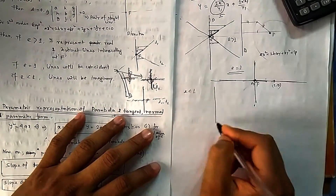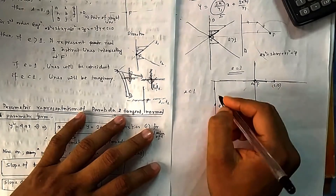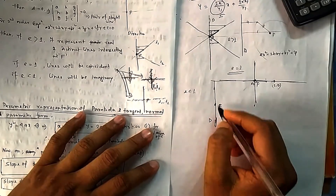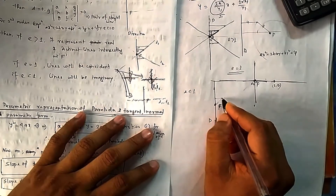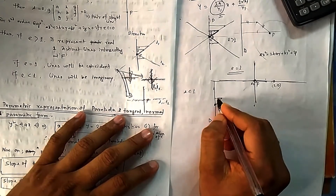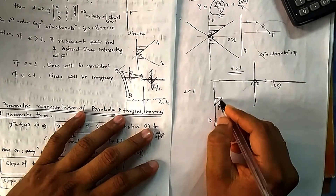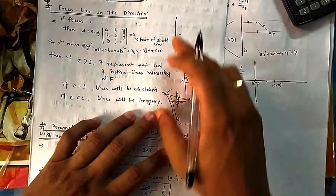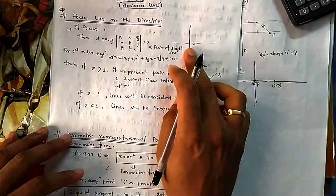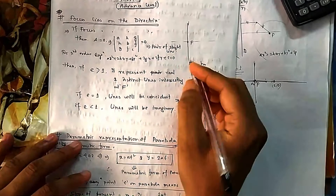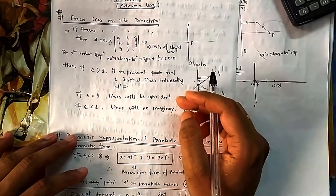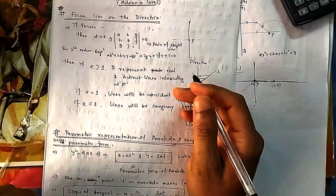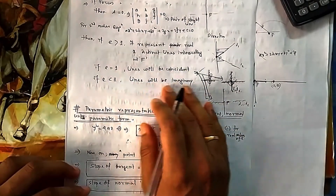Now if e < 1, can you find any real points? You cannot, because anywhere you go the distance from the point forms the hypotenuse of a right triangle, while the perpendicular distance from the line is always shorter. The hypotenuse can never be less than the perpendicular, so no real locus exists. To summarize: if the focus lies on the directrix and e > 1, you get two real distinct straight lines; if e = 1, you get coincident lines; and if e < 1, there are no real straight lines.